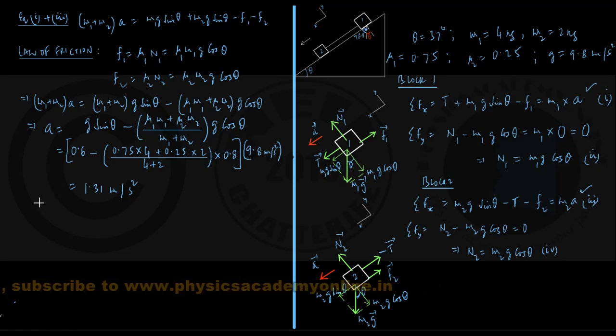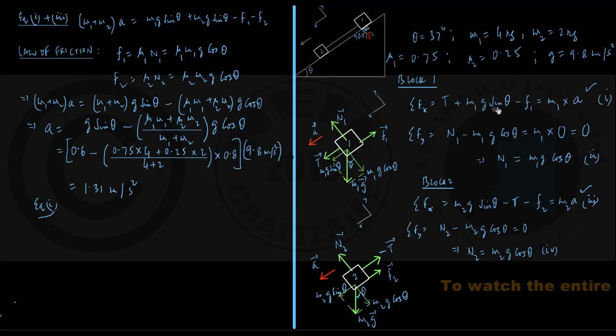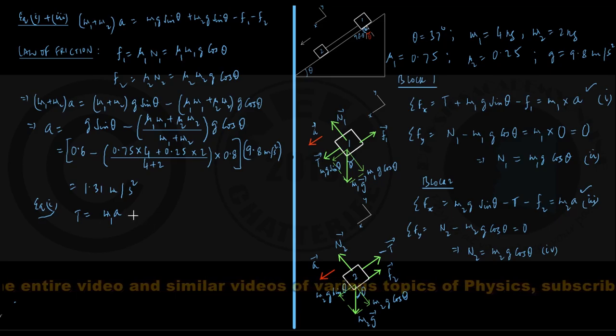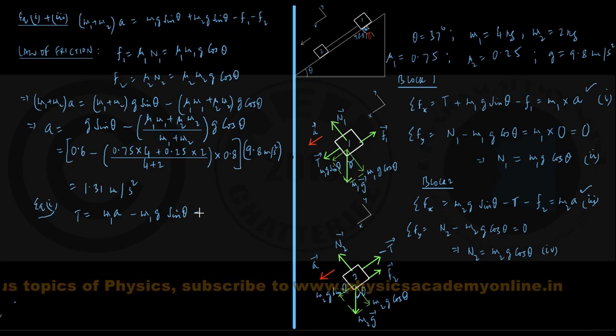So I am here, returning to equation number one, and getting from it, t is equal to m1a minus m1g sin theta plus f1. If you just go for the rearrangement, we get the magnitude of tension force, that is m1 into a minus m1g sin theta plus the frictional force.